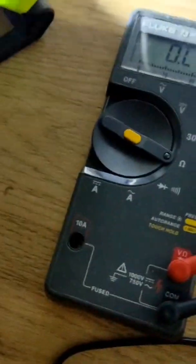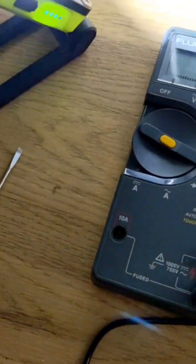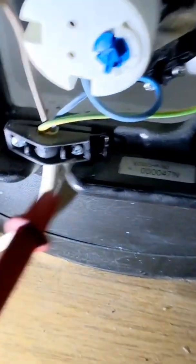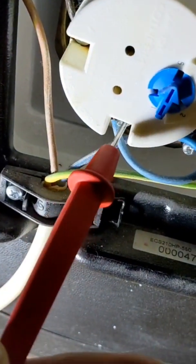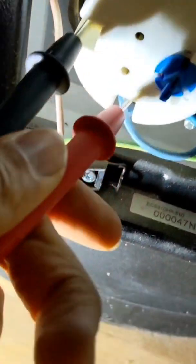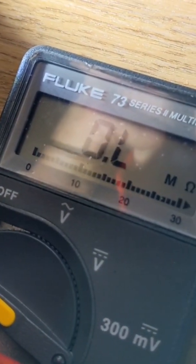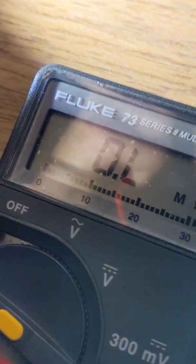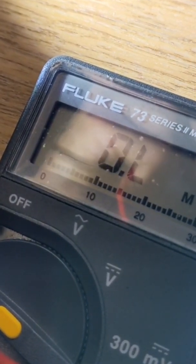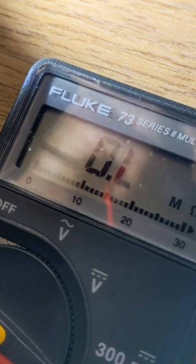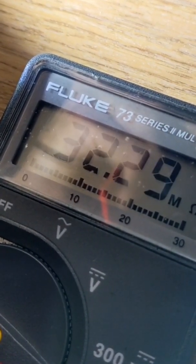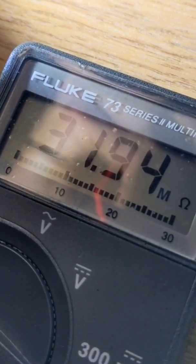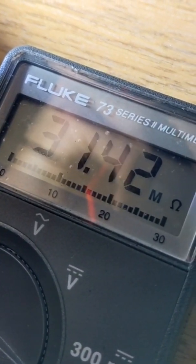Get your multimeter out, set it to ohms, and then first what you want to do is check between live and neutral with the power off. I've got open line. That should be reading 20 ohms or thereabouts, so the resistance is not there. That means the immersion is faulty, or you're going to get a stupid figure like that, 32 mega ohms.